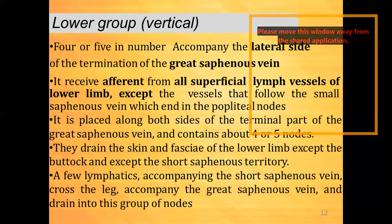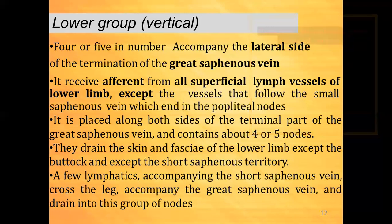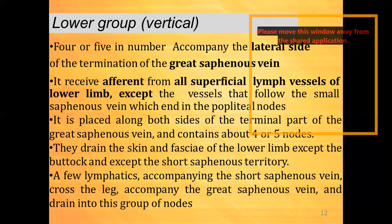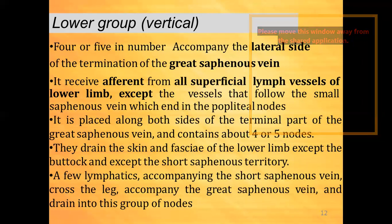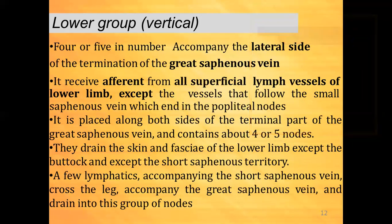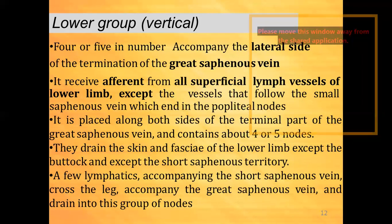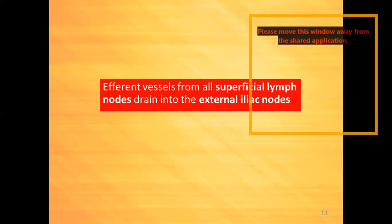To repeat: the vertical group of lymph nodes, four or five in number, accompany the lateral side of the termination of the great saphenous vein. They receive afferents from all superficial lymph vessels of the lower limb, except vessels following the small saphenous vein. They are placed along both sides of the terminal part of the great saphenous vein. Efferent vessels from all superficial lymph nodes drain into the external iliac nodes.